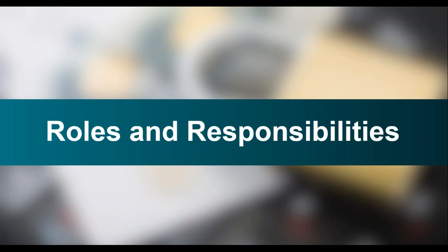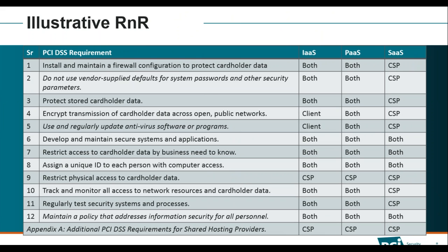How do you handle roles and responsibilities? This illustrative R&R chart shows the 12 PCI DSS requirements mapped to cloud service provider vs. client responsibilities. For example, firewall configuration in an IaaS scenario is marked 'both' — it becomes a gray area: who mandates what rules can be in the firewall, who keeps it up to date, who takes backups and maintains baselines? In SaaS, maintaining firewall configuration becomes 100% the responsibility of the cloud service provider. This is a representation of that orange/green/red shared responsibility chart shown earlier.